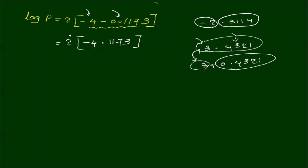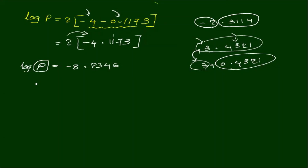So here we have x plus x... minus 8. There is now minus 8.2346. The output is only 10. This is 10 power minus 8.2346. Therefore,